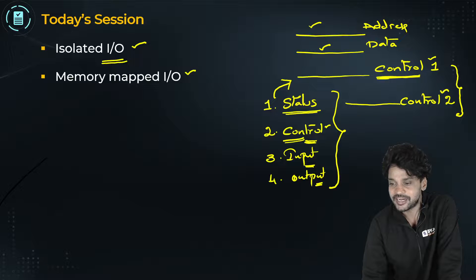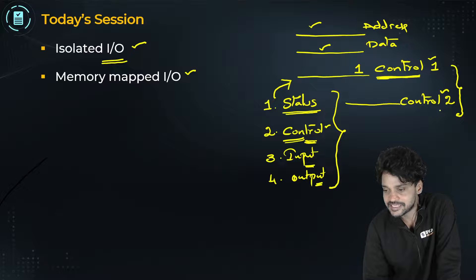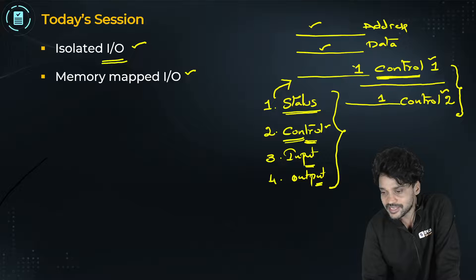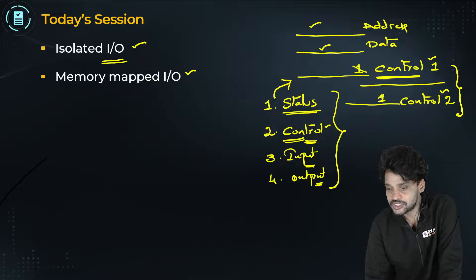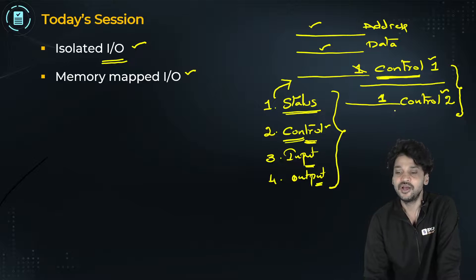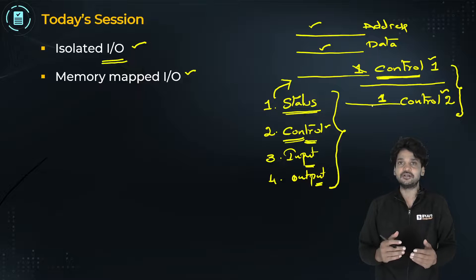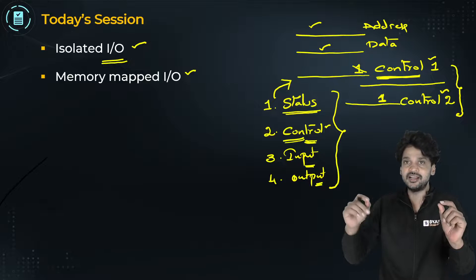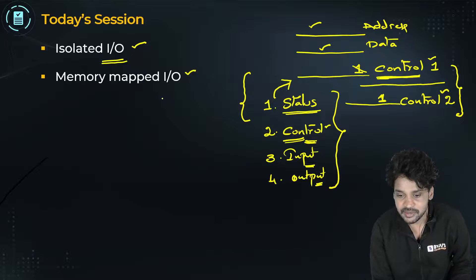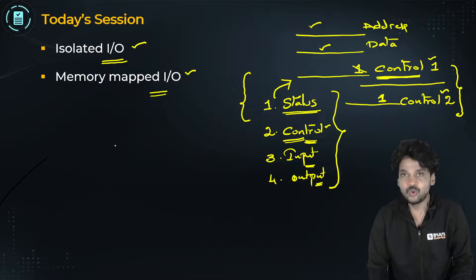When the CPU wants to make a transfer to memory, control line one will be active and control line two will be disabled. When control line two is active, that means the CPU wants to make a transfer to IO devices. So the CPU is able to distinguish between memory and IO device transfers by using two separate control lines.